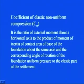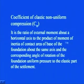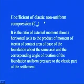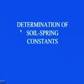The fourth is the coefficient of elastic non-uniform compression, represented as C_phi. It is the ratio of external moment about a horizontal axis (unlike the third case which was about the vertical axis), to the product of moment of inertia of the contact area of the base of the foundation about the same axis and the corresponding angle of rotation of the foundation.